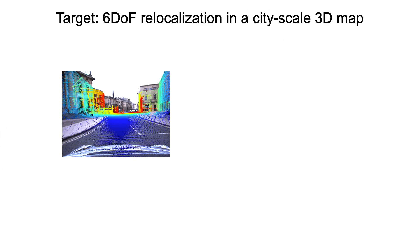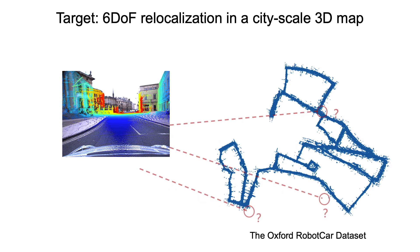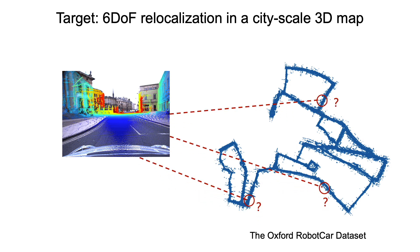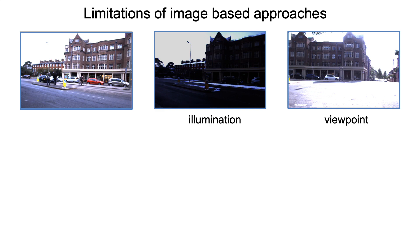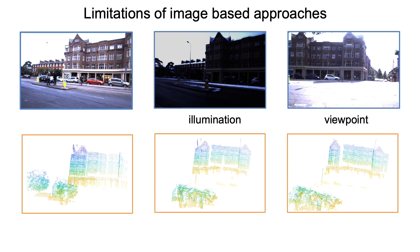In autonomous driving, relocalization within a global 3D map is a critical functionality. Specifically, we aim at estimating an accurate six-DoF pose without using prior position information. A lot of effort has been put into tackling this problem using 2D image descriptors. However, image-based methods can become unreliable in the presence of strong illumination changes or viewpoint variations, which commonly occur in outdoor environments. In contrast, 3D point clouds do not suffer from such issues, showing great potential to provide robust relocalization.